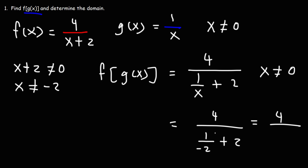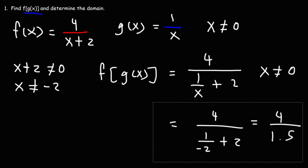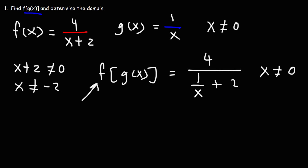If we plug in negative 2, there's no problem. This gives negative 1 half plus 2, which is 1.5, and 4 divided by 1.5 is an okay value. So for the outer function, negative 2 didn't work when it was an individual function, but as a composite function x can be negative 2.